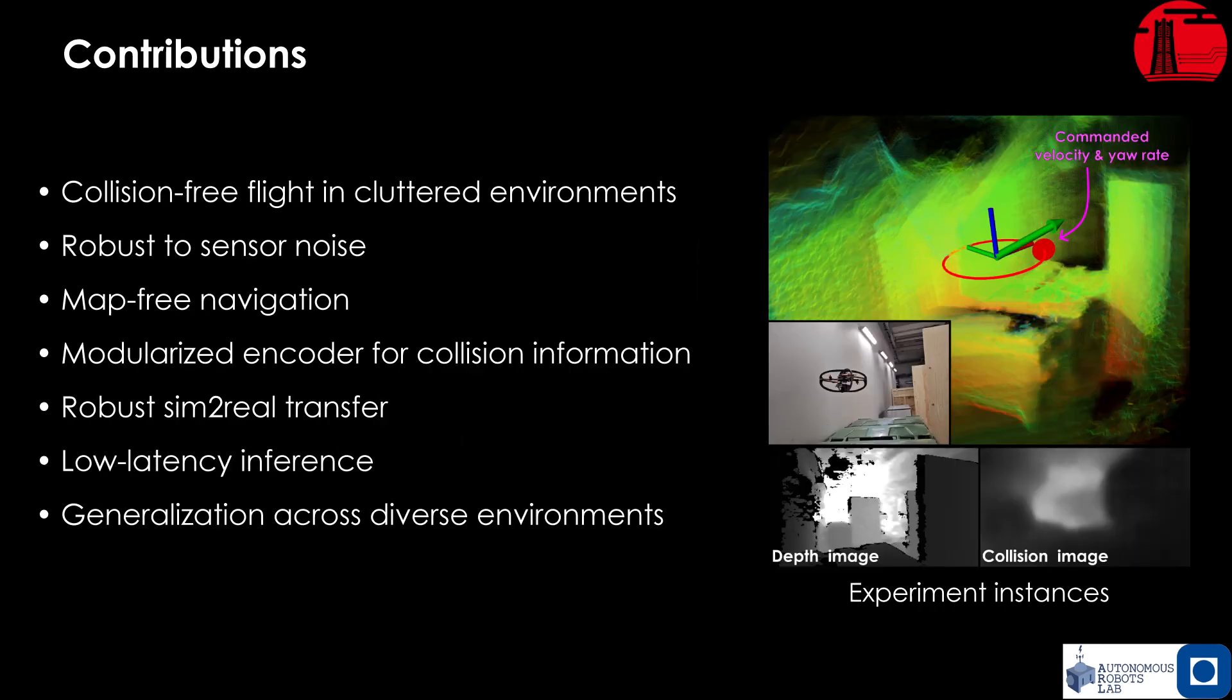We contribute a method for collision-free flight in cluttered environments showcasing robustness to sensor noise. Our approach enables map-free navigation relying on a modularized encoder to capture collision information. We achieve robust sim-to-real transfer allowing for low latency inference on board the robot. Furthermore, our solution demonstrates the ability to generalize across diverse environments.